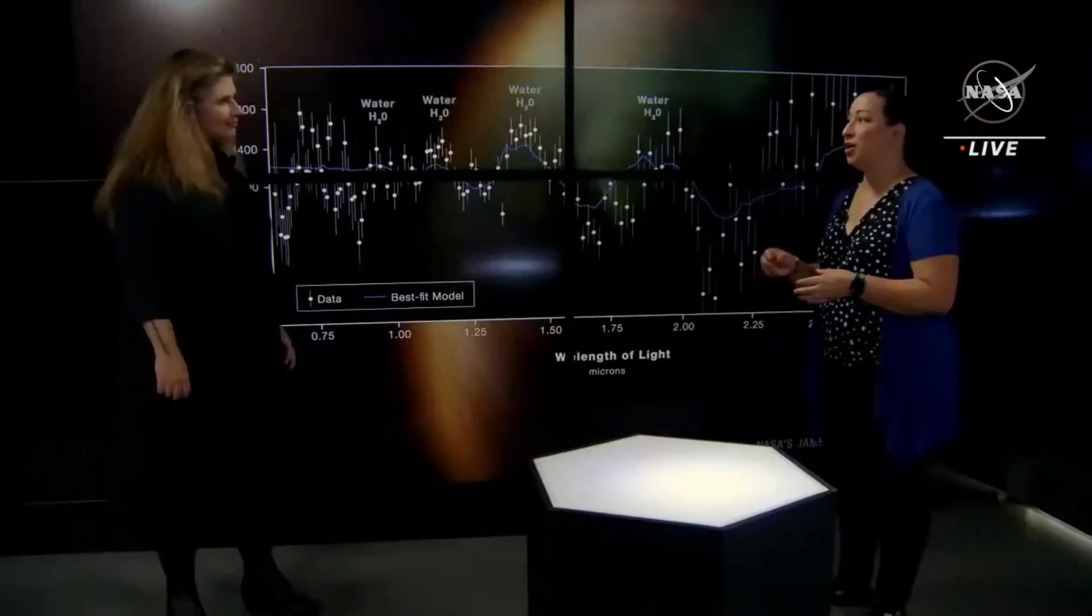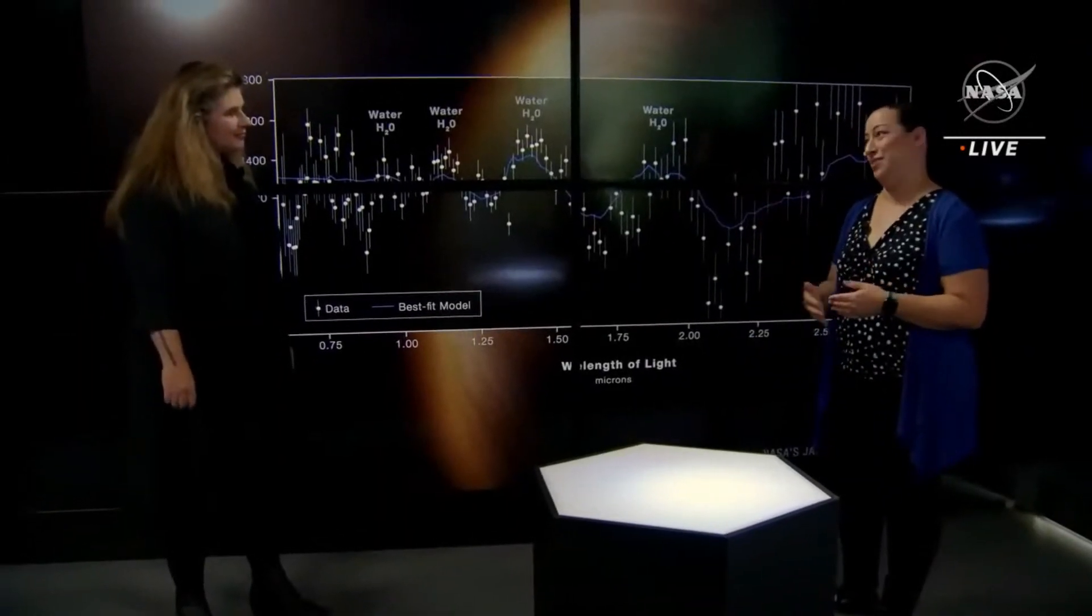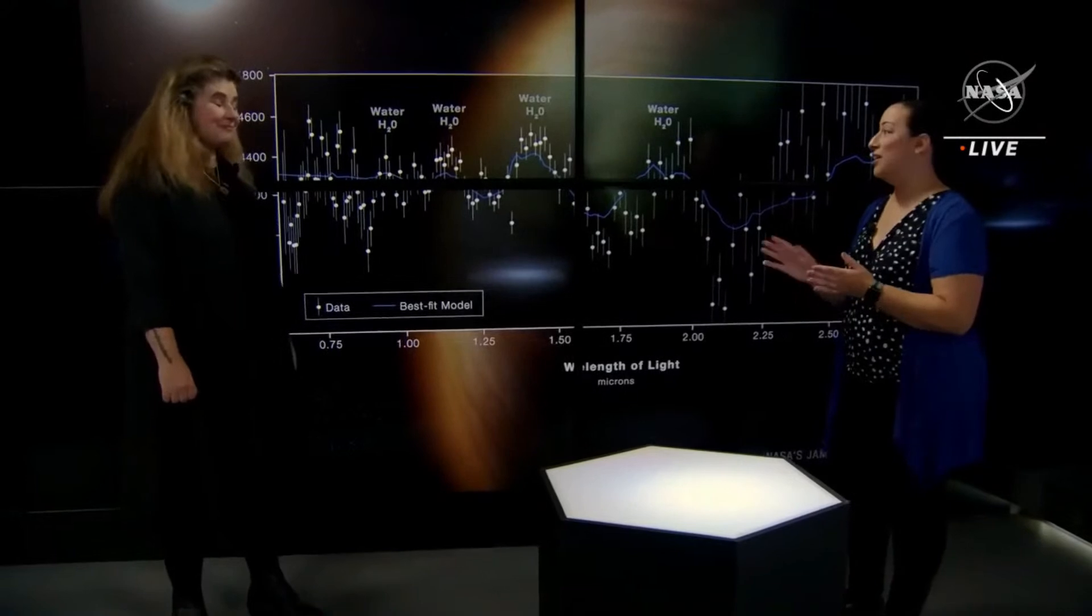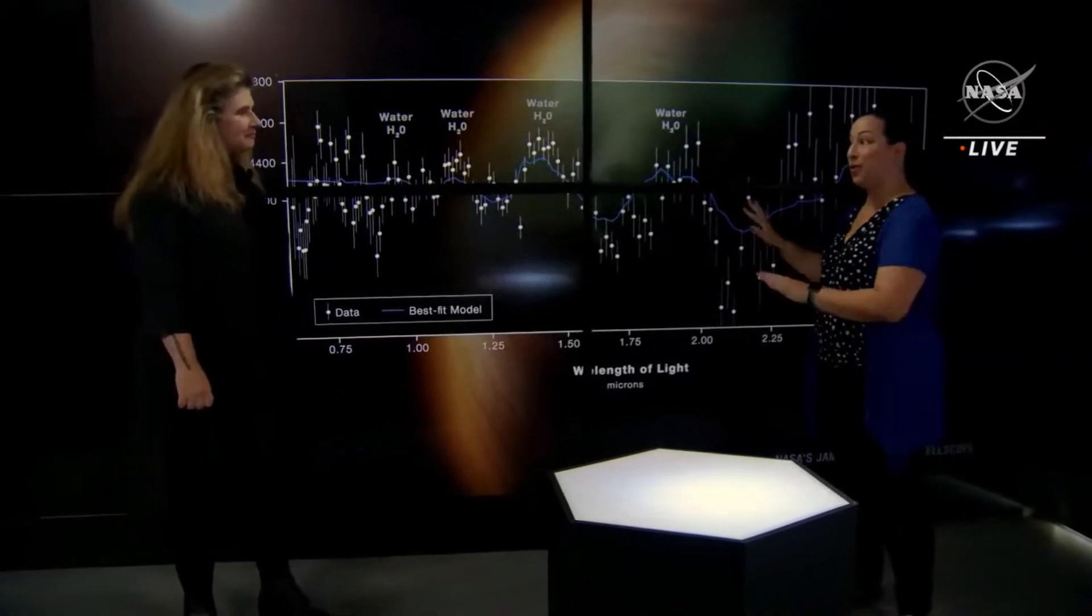This is an exoplanet. It's about the size of Jupiter, about half the mass of Jupiter. It orbits around a sun-like star, but it does it every about three and a half days. So it's extremely hot, extremely close in, nothing like our solar system planets, but that's okay.